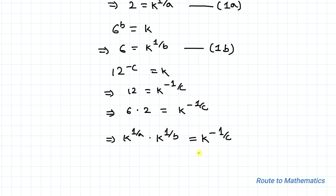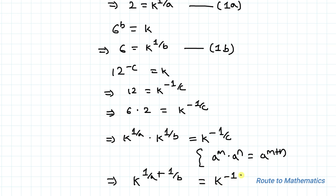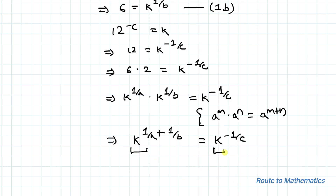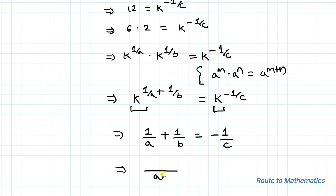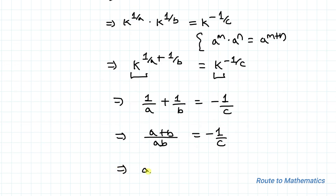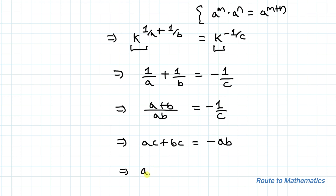Applying the exponential rule — a to the power m times a to the power n equals a to the power (m plus n) — since the bases are the same, we equate the powers: 1 by a plus 1 by b equals minus 1 by c. Taking LCM gives (a plus b) over ab equals minus 1 by c. Cross-multiplying: ac plus bc equals minus ab, so ac plus bc plus ab equals 0. Let's call this equation 3.